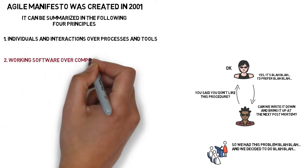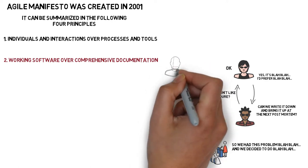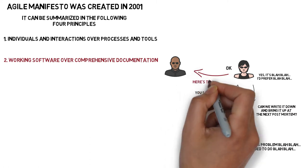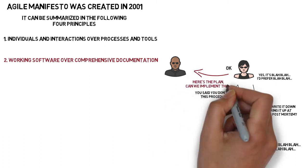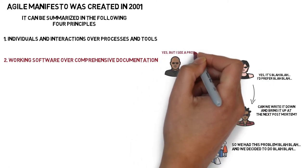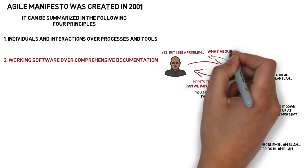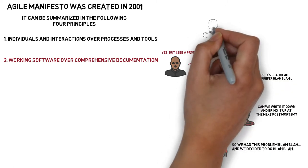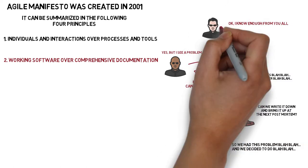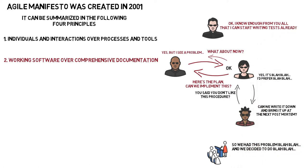2. Working software over comprehensive documentation. The importance of documentation is downplayed in favor of working code, which should be good enough to be understood by all involved parties. I have an issue with this because, from my experience, it's a very idealistic approach. No code is so readable that documentation is not necessary. But I agree that in a project under development, especially under agile development, the code may change very fast and keeping the documentation up to date can be a burden with no real value.